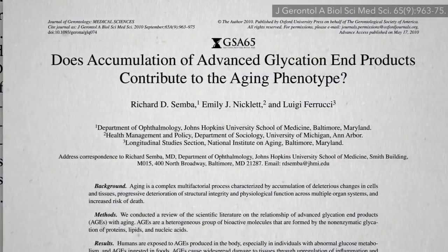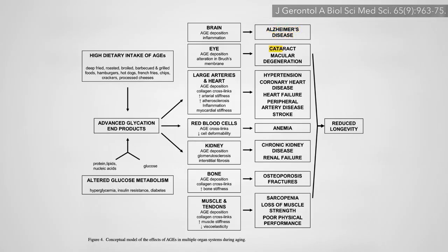AGEs are implicated in degenerative disease from Alzheimer's disease and cataracts to kidney disease and strokes. You get AGEs in your body from two sources, eating them preformed in your diet or making them internally from methylglyoxal if you have high blood sugar levels.